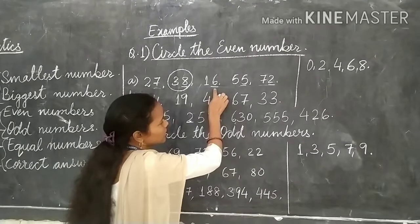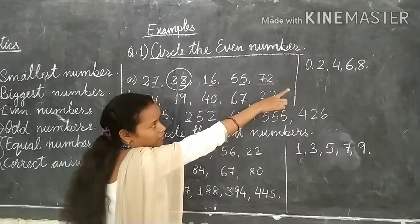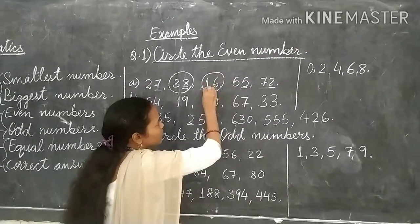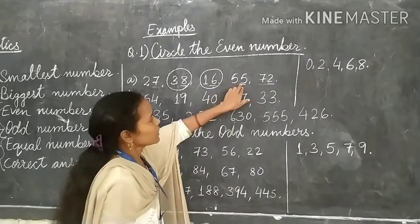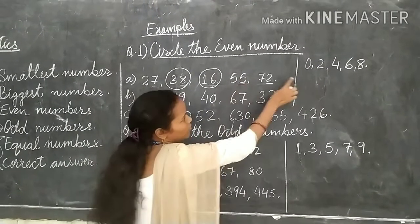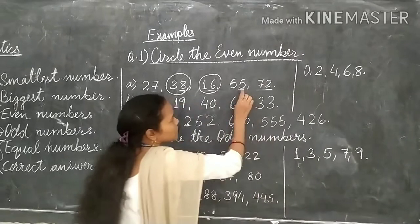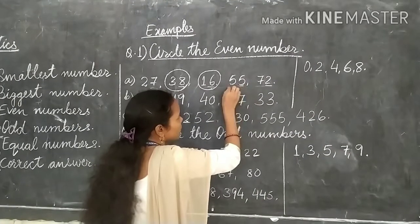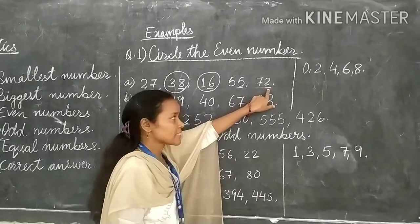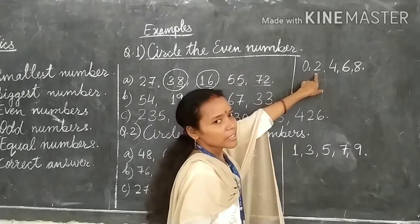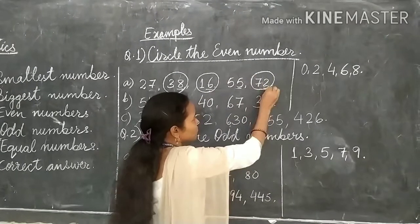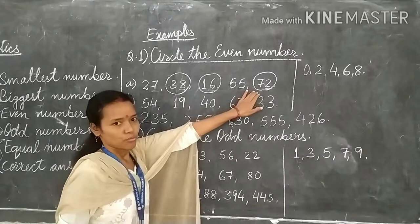Next number is 16. In the place of 1's, 6 is there. 6 is also an even number, so 16 is an even number. Number 55: in the place of 1's, 5 is there, but 5 is not in our even digits, so 55 is an odd number. Now 72: 2 is in the place of 1's, and 2 is an even number, so 72 is an even number. We will circle 72.